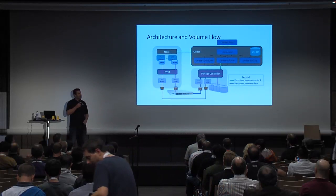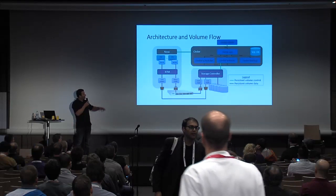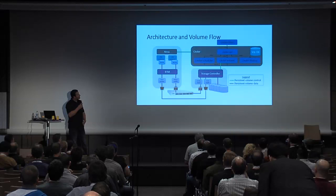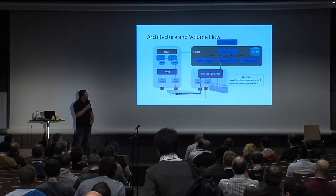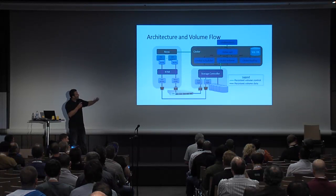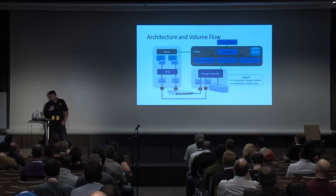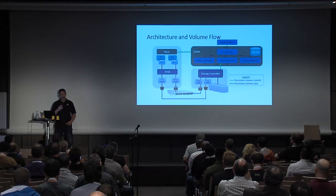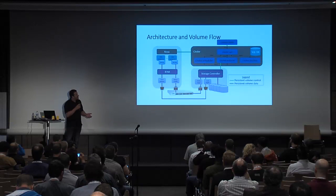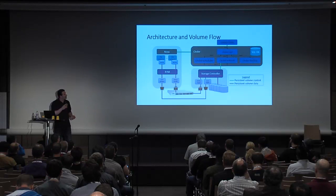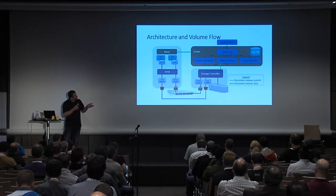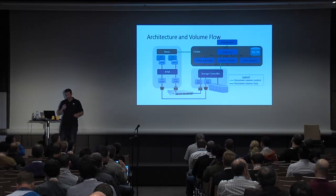Not everybody's a Cinder expert, so I want to explain the process. Nova has just as many components, if not more, but I wanted to blow up Cinder and show the main pieces. Inside Cinder we have the Cinder API, the Scheduler, the Volume Manager, and Cinder Backup. On volume creation, the Cinder client sends an API request over REST to the Cinder API. The Cinder API takes that request, turns it over to the Scheduler, which uses capabilities reported from the backend storage controller and decides — based on configurable filters and weights — where that volume would best be suited. Then it goes to Cinder Volume, which creates the volume on the backend storage array, LVM, or a distributed file system.